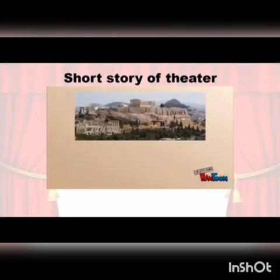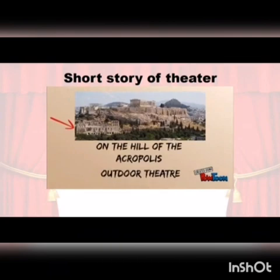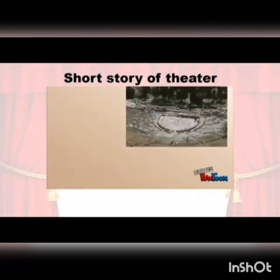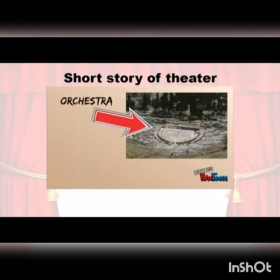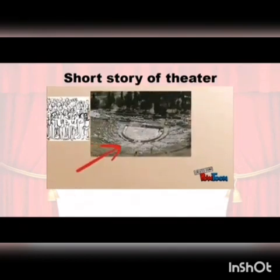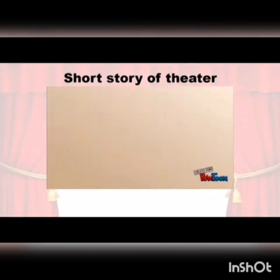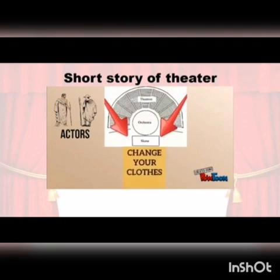It is the Dionysus theater in Athens. It is located on the hill of the Acropolis, and it is an outdoor theater. It is made of stone and marble. In the picture, you can see a circular area called orchestra. It was a space where the chorus sang and danced. The audience watched the play from the theater. The actors changed their clothes in the skene — it was a tent behind the orchestra.